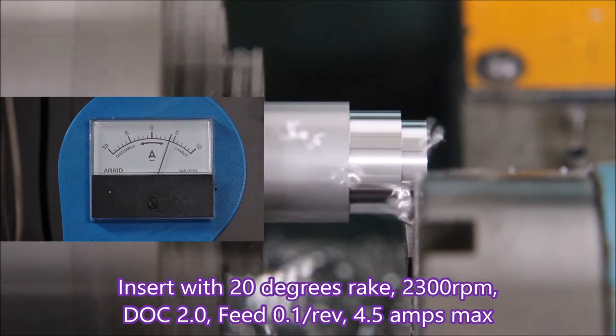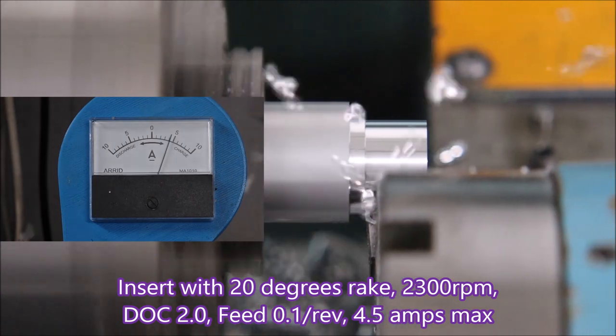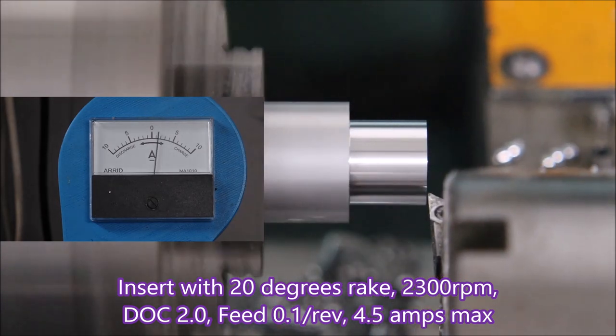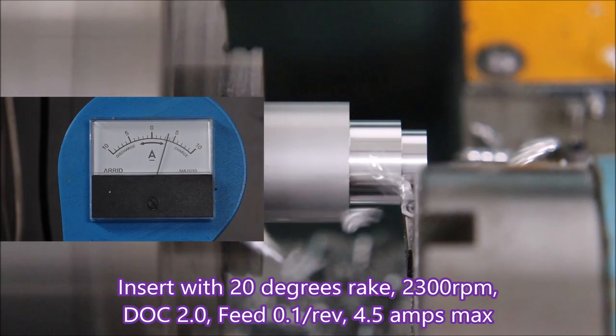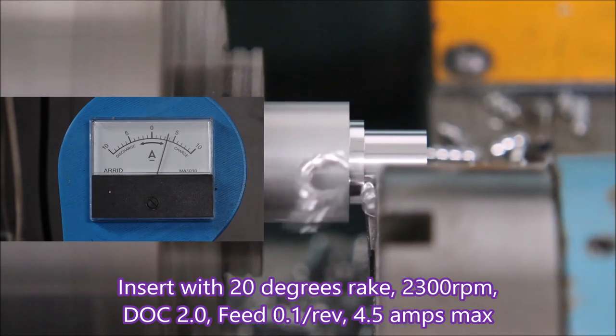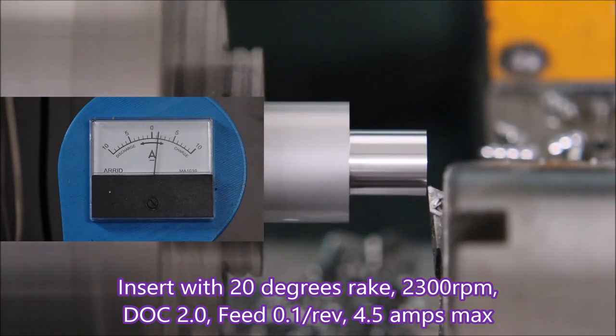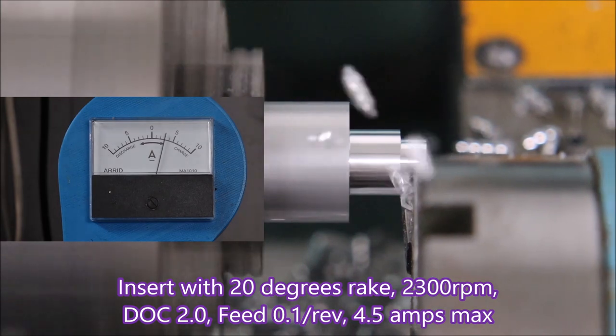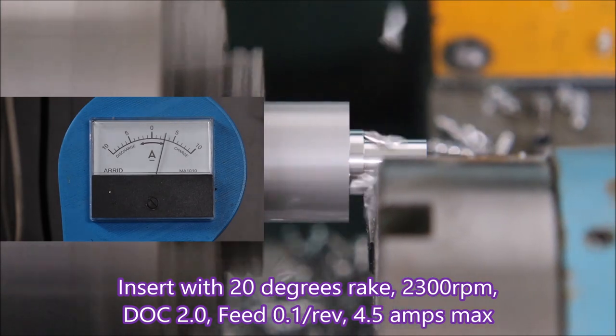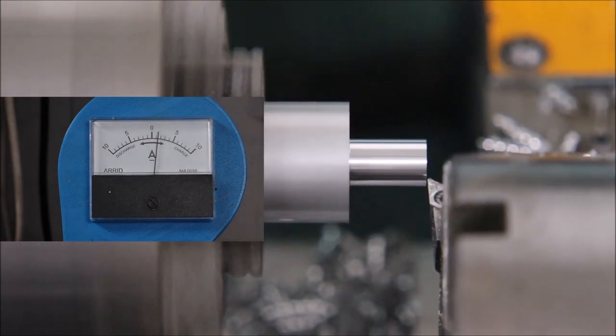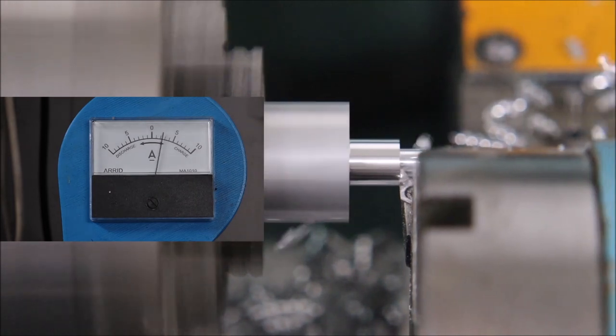So if you have a small machine with little power at your disposal, grind some rake on your high speed steel tools or use inserts with lots of rake. You can get 20 degrees of rake on aluminum on inserts that are not for aluminum, so there are plenty of choices available.